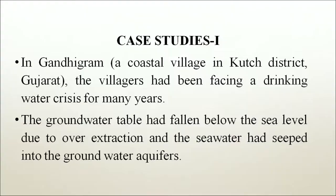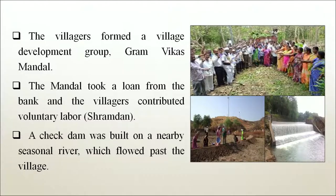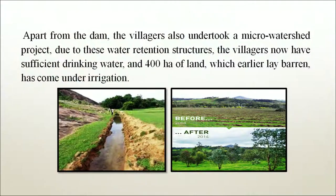In Gandhigram, a coastal village in Kutch district, Gujarat, villagers had been facing a drinking water crisis for many years. The groundwater table had fallen below sea level due to over-extraction and seawater had seeped into the groundwater aquifers. The villagers formed a village development group, the Gram Vikas Mandal. The Mandal took a loan from the bank and the villagers contributed voluntary labor, Shramdan. A check dam was built on a nearby Cisna river. The villagers also undertook a watershed project, resulting in sufficient drinking water and 400 hectares of formerly barren land coming under irrigation.